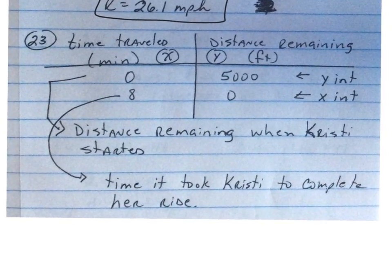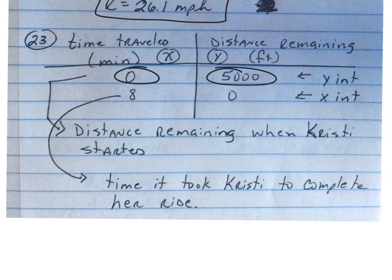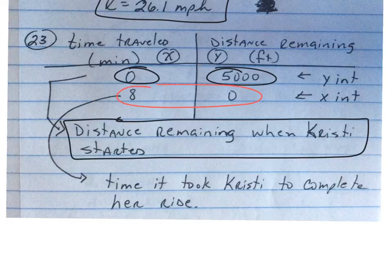Finally, on number 23, time travel, distance remaining, you need to tell me what the intercepts mean. Well, when X is 0, Y is 5,000. So that means that's the distance remaining when Christy started. And then 8-0 is the time it took Christy to complete her ride. So that means that's the time it took Christy to complete her ride.